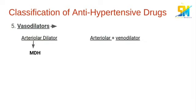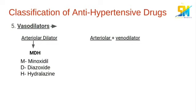The fifth category is the vasodilators, which include arteriolar dilators and arteriolar plus venodilators. The mnemonic for arteriolar dilators is 'MDH': minoxidil, diazoxide, and hydralazine. And the drug in the arteriolar plus venodilator category is sodium nitroprusside.